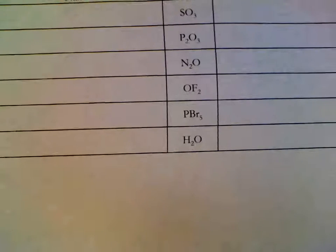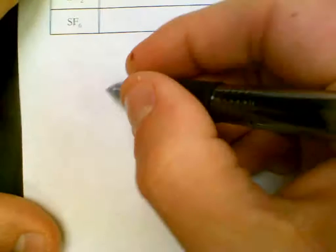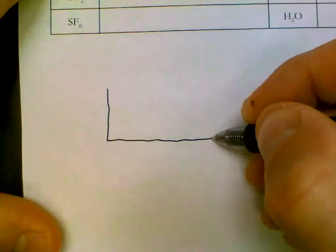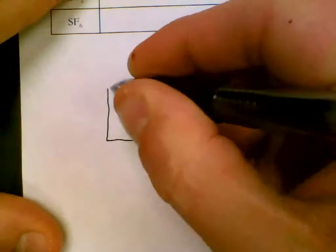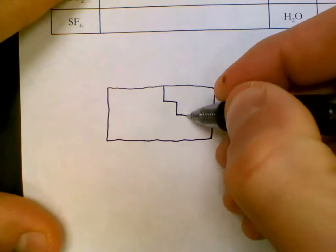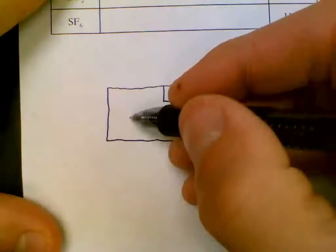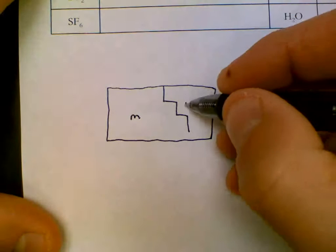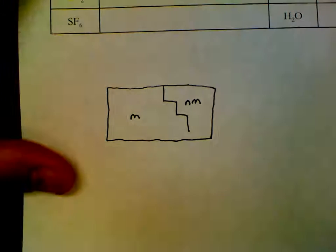The bottom half is non-metals stuck to non-metals. If you are unsure of what we are saying by metals stuck to non-metals and non-metals stuck to non-metals, on your periodic table we have a stair-stepped line. On the left-hand side are metals. On the right-hand side are non-metals.